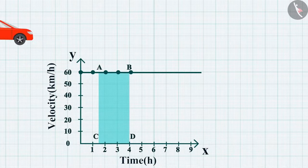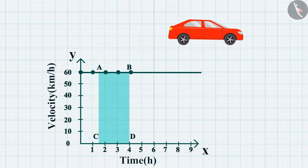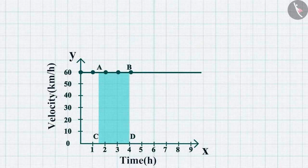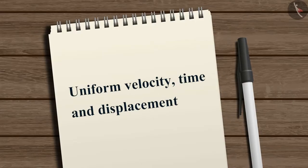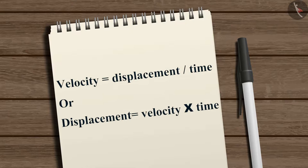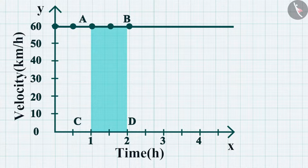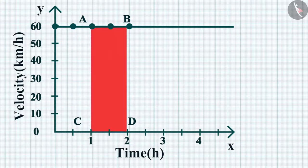As the car is moving at a uniform velocity, the height of its velocity-time graph will not change with time — it is a straight line parallel to the x-axis. We know that velocity = displacement / time, or displacement = velocity × time. Hence, the area enclosed by the velocity-time graph and the time axis is equal to the magnitude of the displacement.